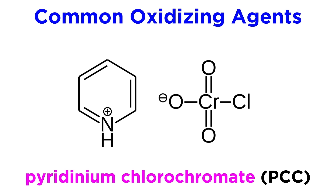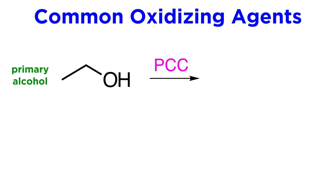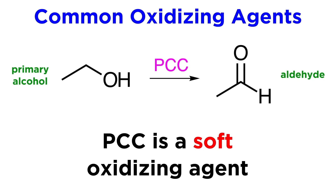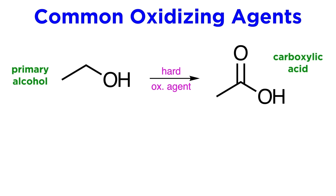Now let's look at some specific reagents. The first one is pyridinium chlorochromate, or PCC. When using this with a primary alcohol, this will stop at the aldehyde, with only two bonds to oxygen. So we can consider this a soft oxidizing agent, in that it doesn't oxidize to the extent that some other reagents do.